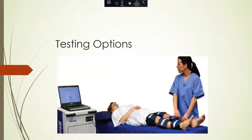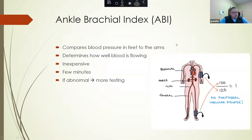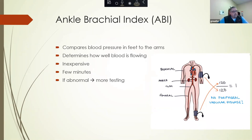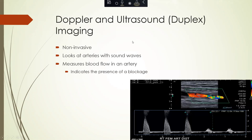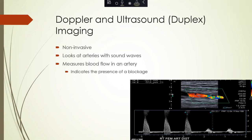Once there is a concern for peripheral arterial disease, there are some testing options your physician may order. The first is often called the ankle brachial index, or ABI. It's a very simple, inexpensive test that only takes a couple of minutes and compares the blood pressure in your feet to that in your arms, which determines how well your blood is flowing to your feet. If this is abnormal, it often leads to more testing, such as an ultrasound or Doppler — often called a duplex — which uses sound waves to look at the arteries in your legs and can indicate the presence of a blockage.